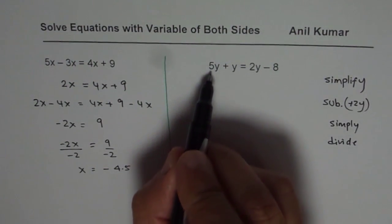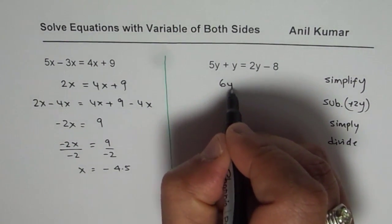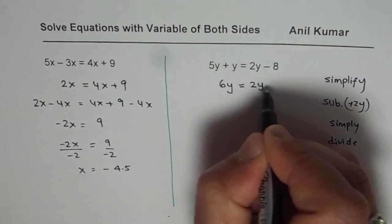These are the steps. So let us begin. 5y plus y is 6y, so we get 6y equals 2y minus 8.